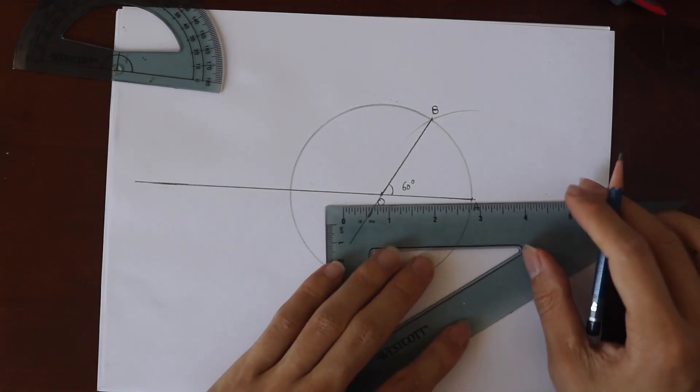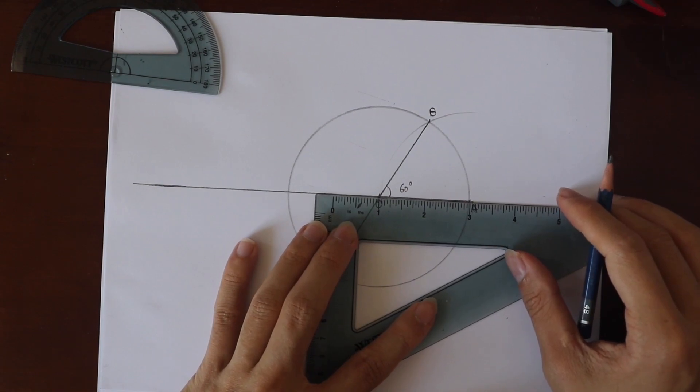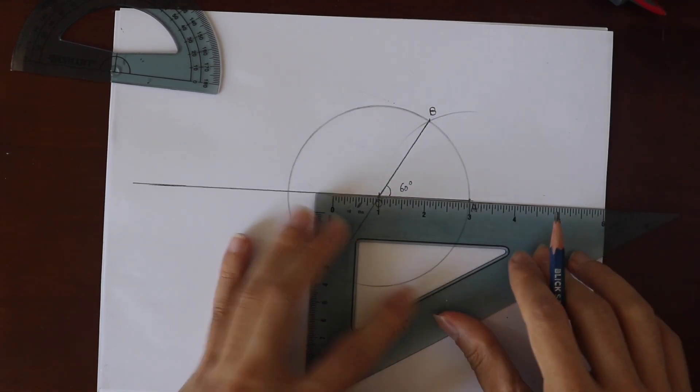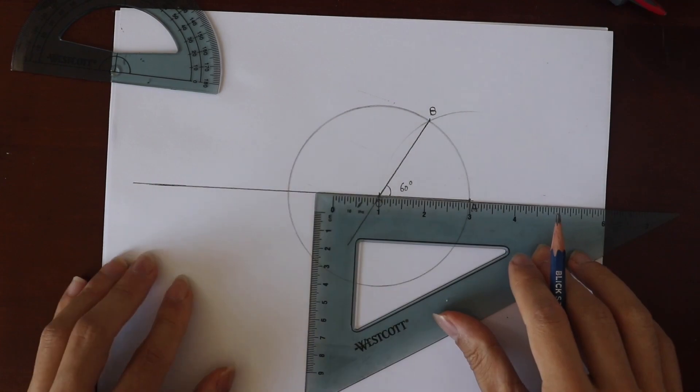Now I use the scales on my ruler to match O and A. We see that the scale 1 matches the point O and scale 3 matches the point A.